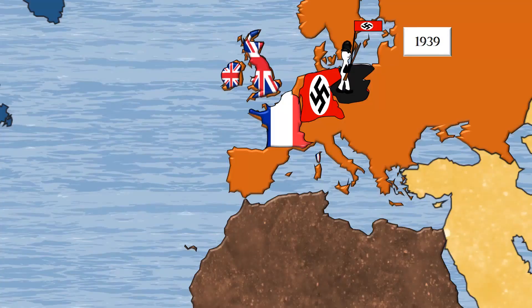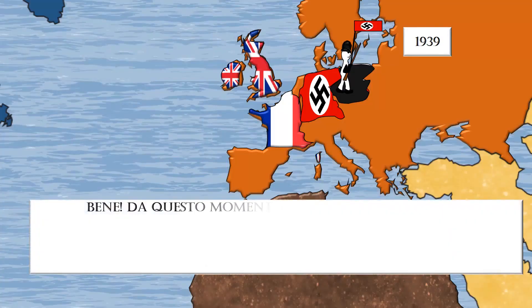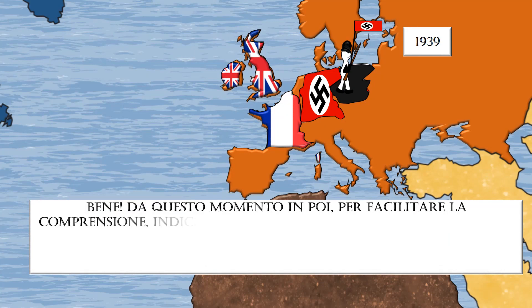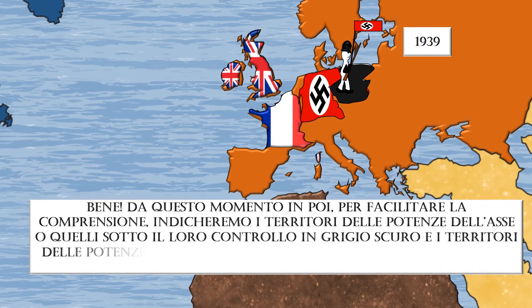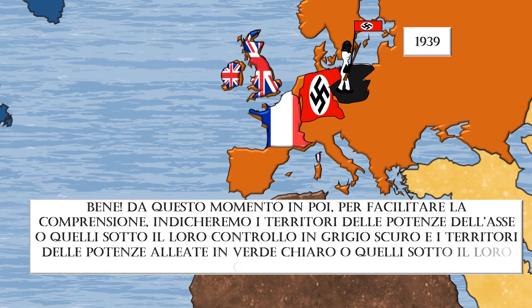From now on, for ease of understanding, we will indicate the territories of the Axis powers, or those under their control, in dark grey, and the territories of the Allied powers, or those under their control, in light green.